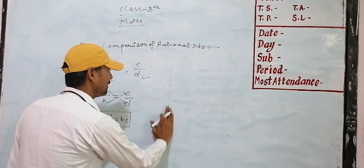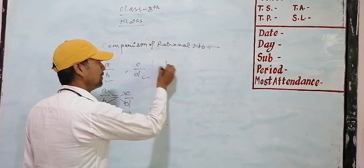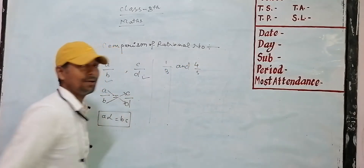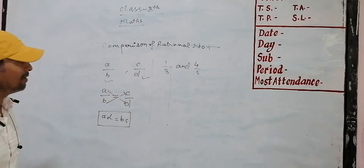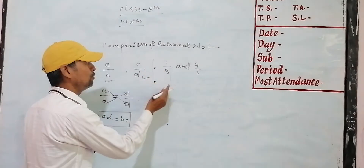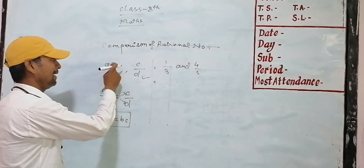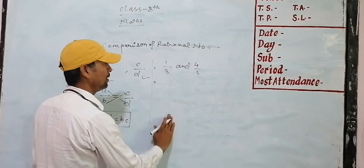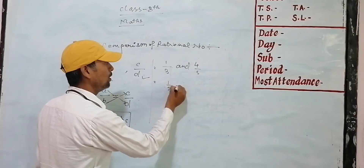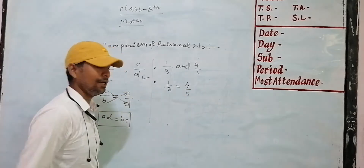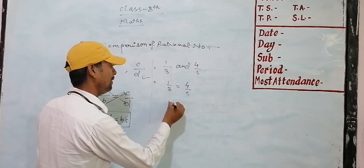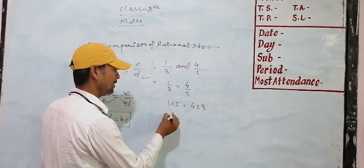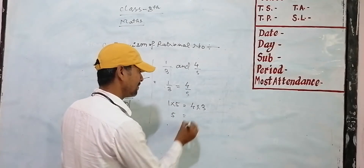Now you can see some examples. Compare 1 by 3 and 4 by 5. Which is greater? We treat 1 by 3 as a by b and 4 by 5 as c by d. We cross-multiply: 1×5 equals 5, and 4×3 equals 12.